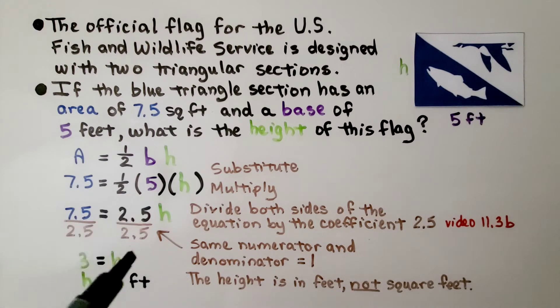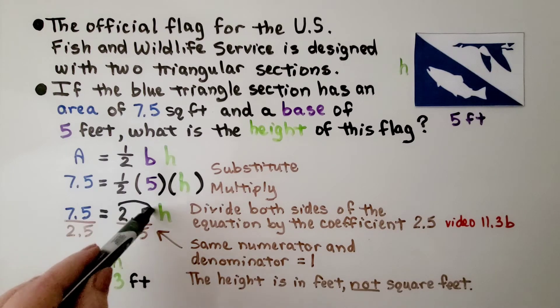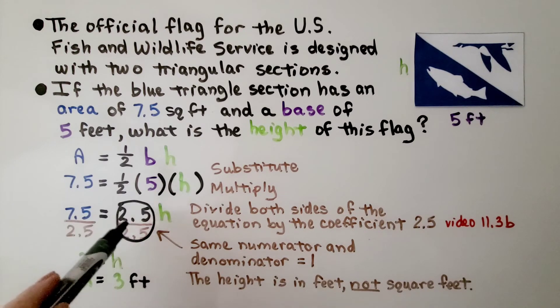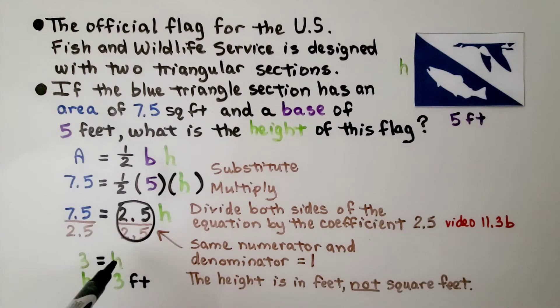And because this is the same numerator and denominator, this is a 1, isn't it? This becomes 1h. We just have an h here. And 7.5 divided by 2.5 is 3. We know the height is in feet, not square feet. The height is 3 feet.